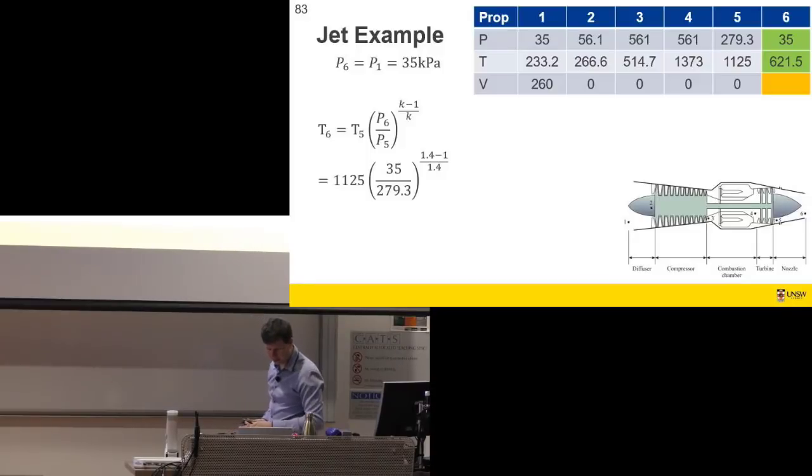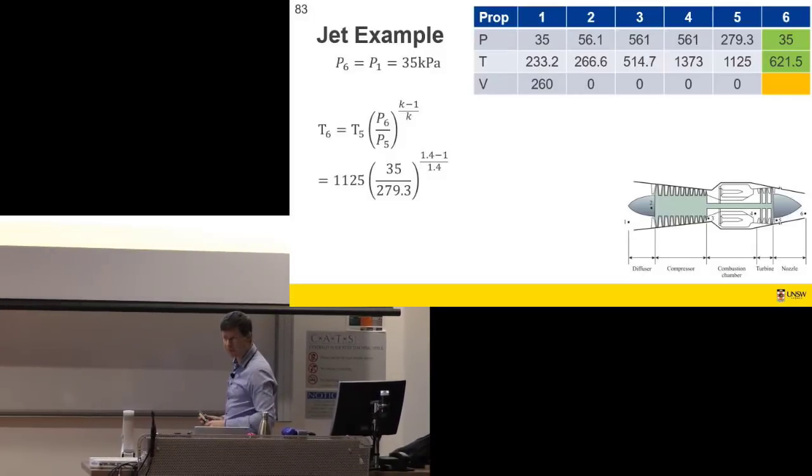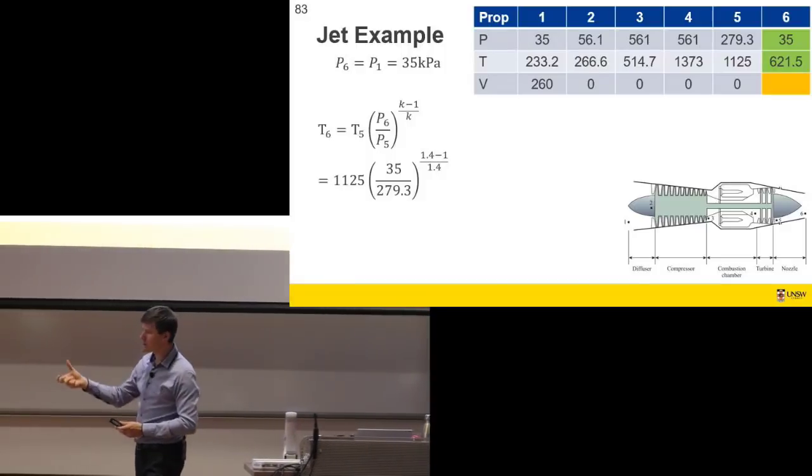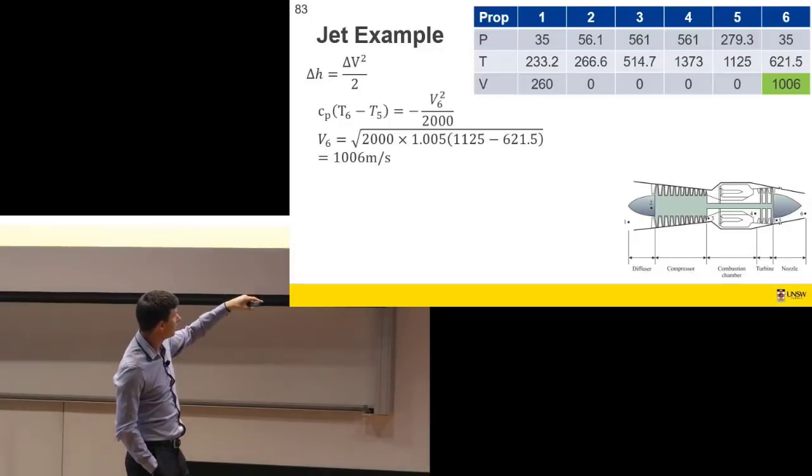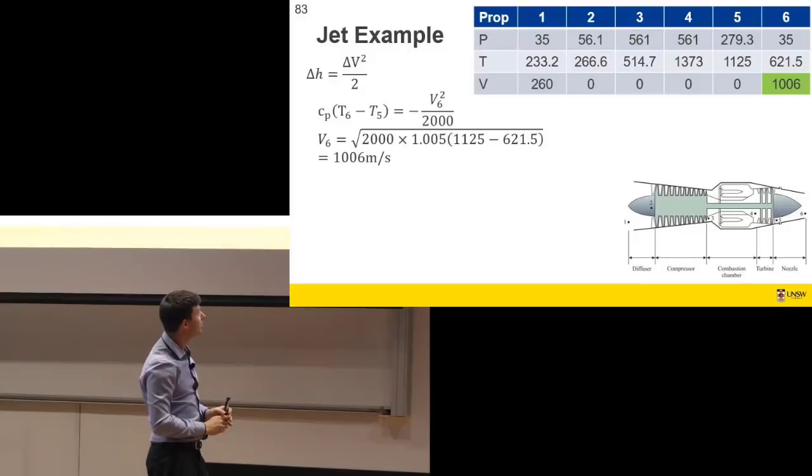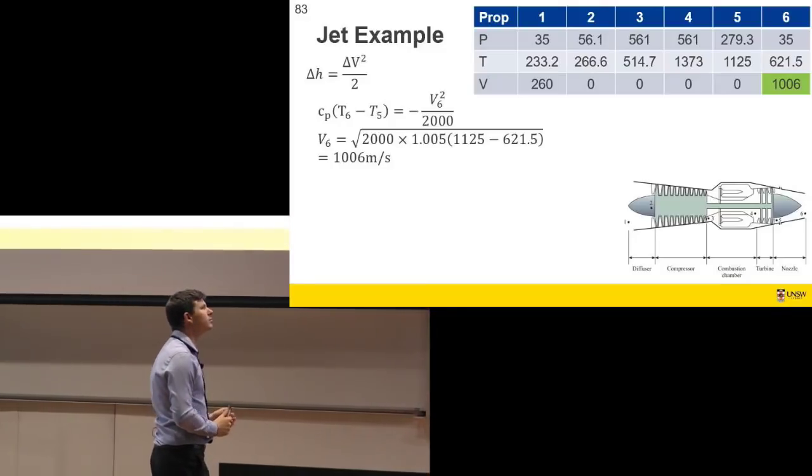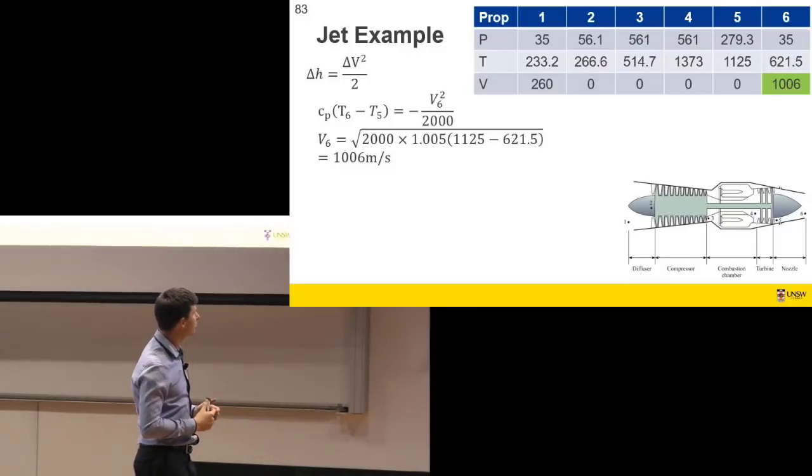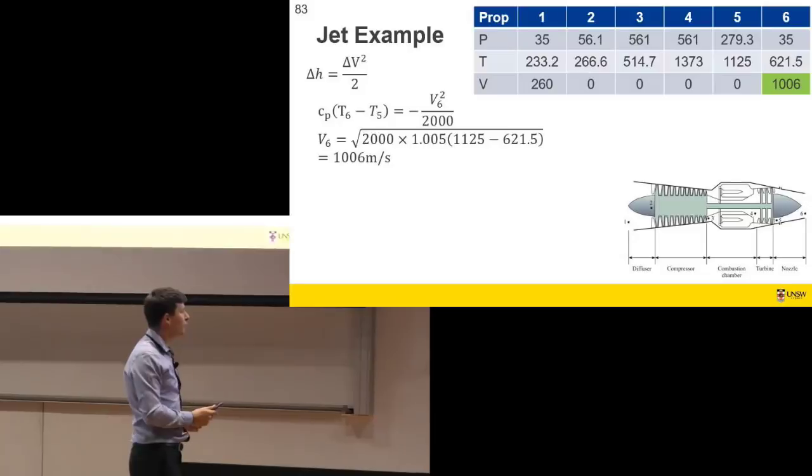Now then the question is, what's then the velocity of that gas? And again, we can use change in enthalpy equals change in kinetic energy through an ideal nozzle. Cp change in temperatures equals velocity six. Velocity five was zero. And so we find that we've got a velocity of our exit stream of a thousand meters a second. And that's the whole thing that this unit does. So we're burning fuel and accelerating our fluid. There's no electrical output.